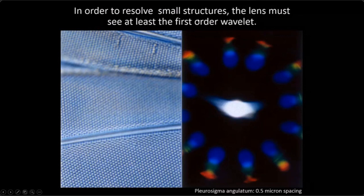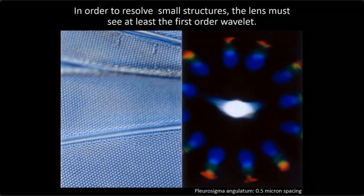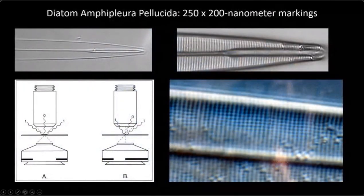Let's look at something right on the limit of resolution of a light microscope. This is Pleurosigma angulatum — these little spacings are half-micron spaces, pretty close to the resolution limit. If you take the eyepiece out and look down the back of the objective, that's the zero order and this is the first order. We're not seeing the second or third order because as object spacing gets smaller, the diffraction wavelets separate farther apart, until at some point the objective lens can no longer capture them.